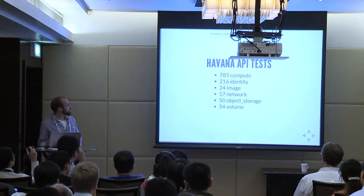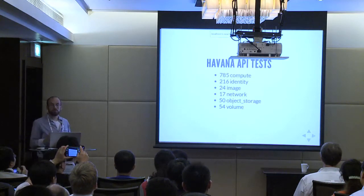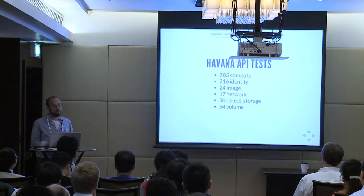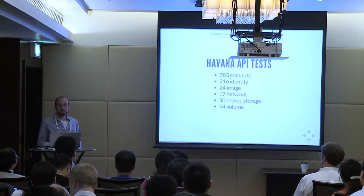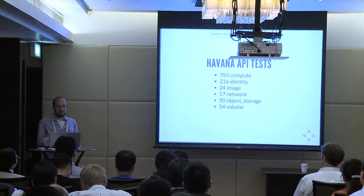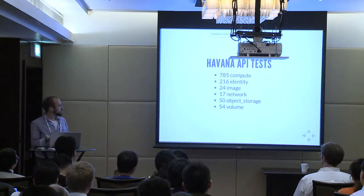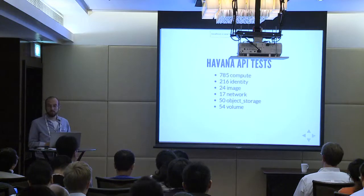Breaking down the API tests: Nova is a huge, oldest project, so we have a lot of tests for it — 785 API tests. Keystone is also old and very big, with a V3 API that has full coverage in Tempest. And we have tests for imaging, network, object storage, and volume. We're going to start adding more things for Heat and others as we grow out.